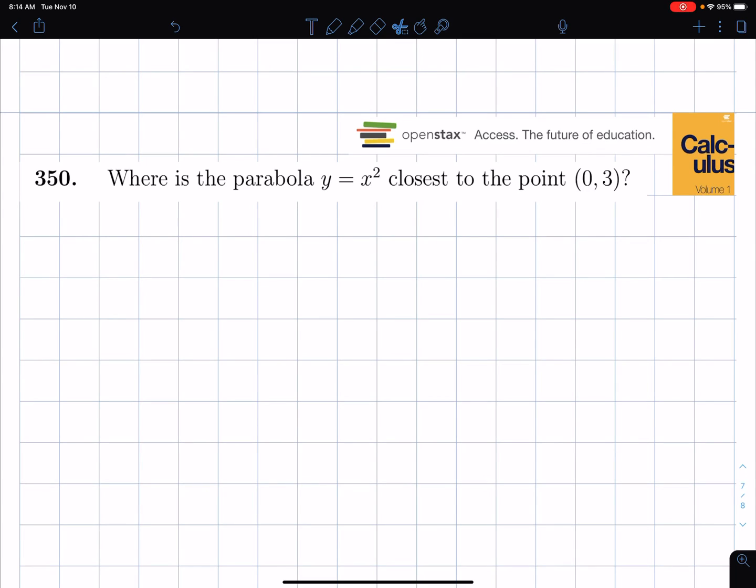Hi everyone, let's do this problem which is an optimization problem from calculus where we look at a curve y equals x squared which is a parabola and we try to find a point on the curve closest to the point (0,3).